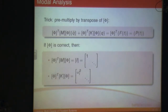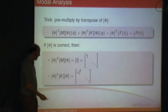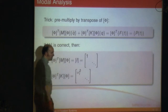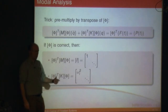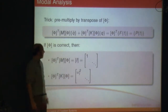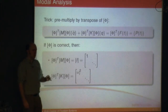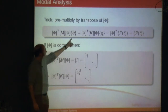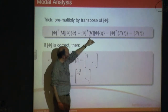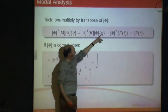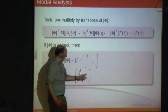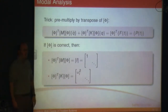That second term — φ-transpose times K times φ — again if you've got the values of φ correctly, this simply becomes a diagonal matrix with ωi² down the middle: ω1², ω2², ω3²; all the other terms are 0. What that means is that these equations will therefore be completely uncoupled. If we're dealing with q1, we have q̈1 plus ω1²·q1; all the other terms are 0 in the first row — q2, q3, and so on are all multiplied by 0 — so the equation is completely uncoupled.